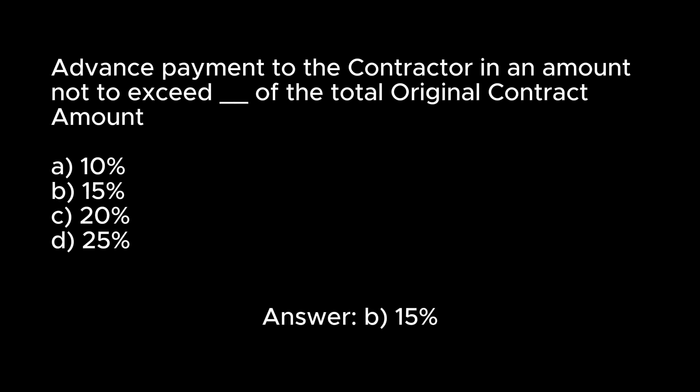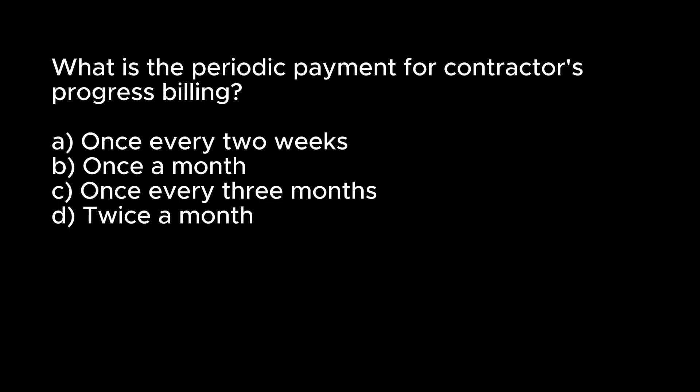What is the periodic payment for contractor's progress billing? A. Once every two weeks. B. Once a month. C. Once every three months. D. Twice a month. Answer: B. Once a month.